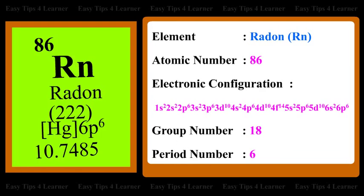For the element radon, the atomic number is 86. The electronic configuration is 1s² 2s² 2p⁶ 3s² 3p⁶ 3d¹⁰ 4s² 4p⁶ 4d¹⁰ 4f¹⁴ 5s² 5p⁶ 5d¹⁰ 6s² 6p⁶. The group number is 18 and the period number is 6.